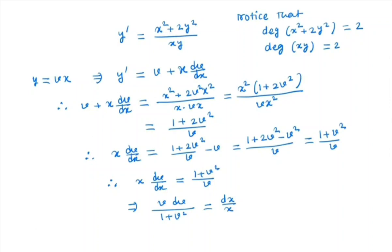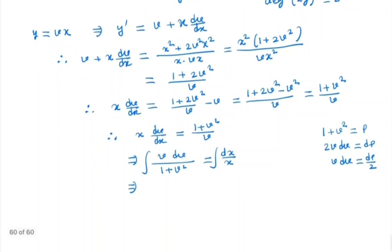So clearly this is a separable ODE. So what we will do, we will integrate both sides. So we get integral vdv by 1 plus v square is equal to integral dx by x. Now for the left hand side, we will take 1 plus v square is equal to some p. So we have 2vdv is equal to dp. So again vdv is equal to dp by 2. So vdv is dp by 2 and we have 1 plus v square is p.